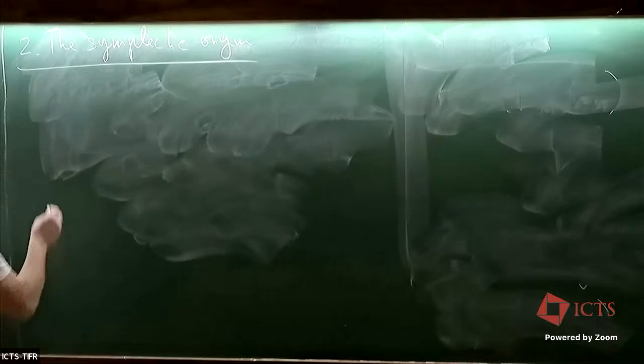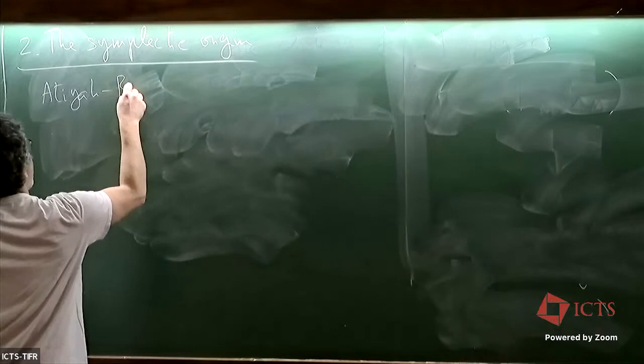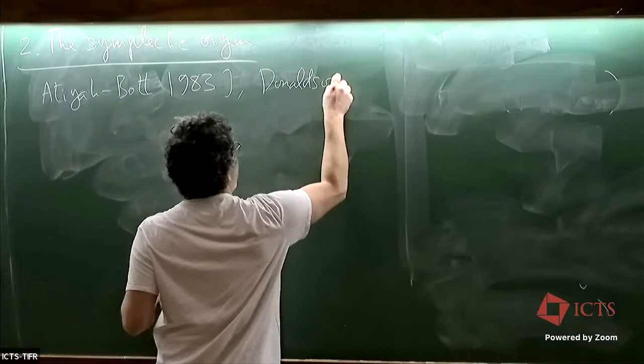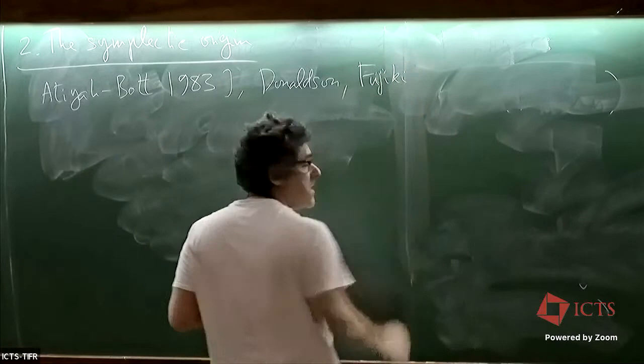So, I mean, this viewpoint of gauge theory and metric equations has a long history that may start with Tian and Donaldson—the paper in 1983—and has been applied a lot by Donaldson, Fujiki, the people in the constant scalar curvature Kähler metric problem. So, as before, we fix M.